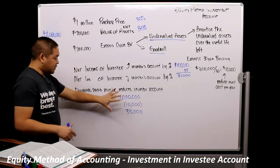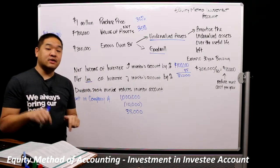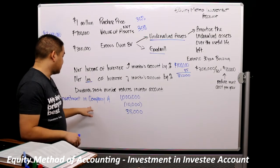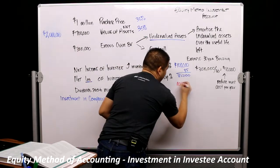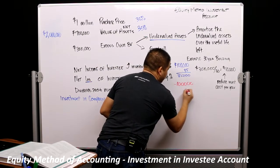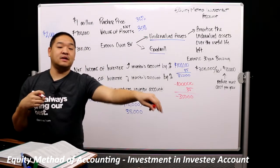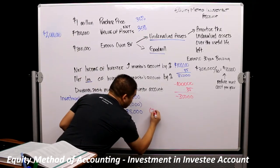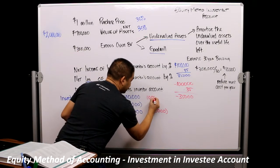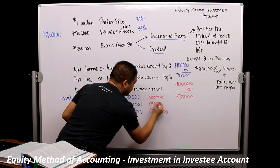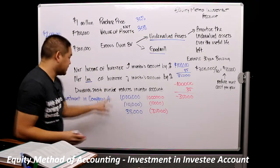If there was a net loss instead, we would do the same thing but we would decrease our investment in company A. For example, if instead of $100,000 gain we had a $100,000 loss, at 35% we would get a $35,000 net loss attributed to our investment in the investee. We would bring down that balance by $35,000 — so we'd have a million dollars, minus $10,000, minus $35,000, giving us a negative $45,000 for the year. But let's stick with our net income example.